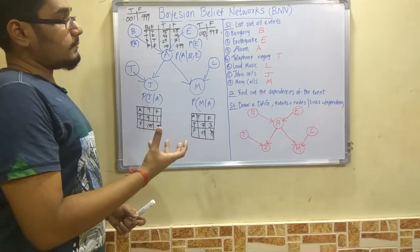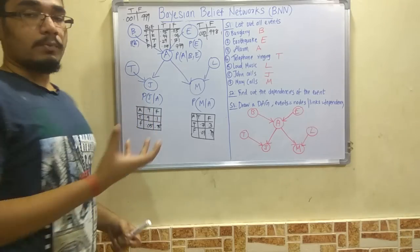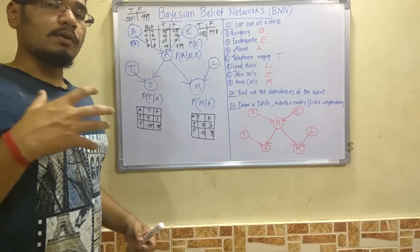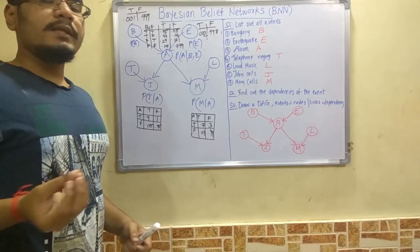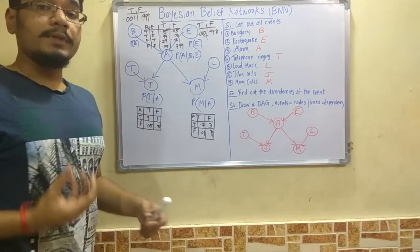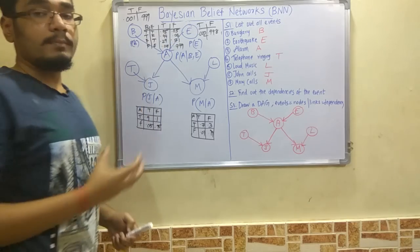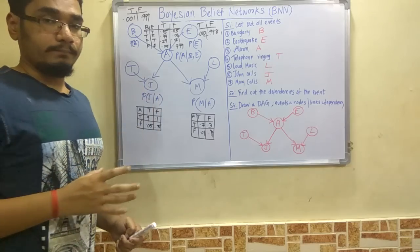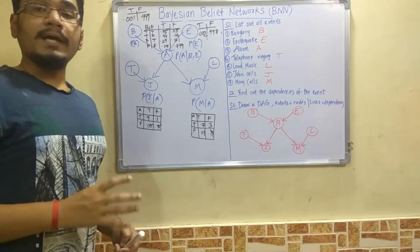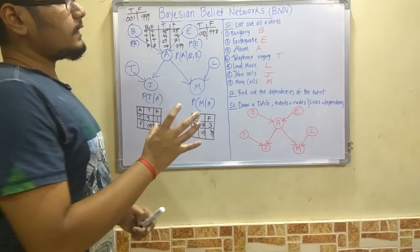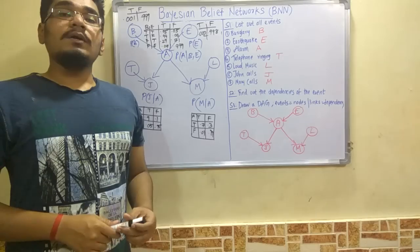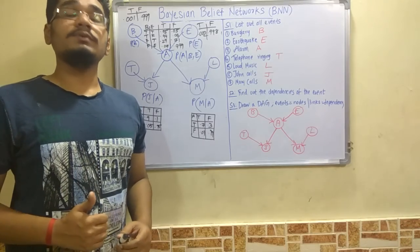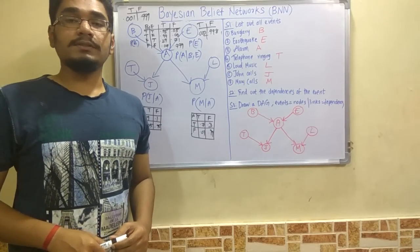The Bayesian network probability is not randomized but is dependent on previous events and influenced by parent events. This is the Bayesian network in artificial intelligence explained in detail. If you found this video helpful, please hit the like button and subscribe to the channel. Thanks for watching.